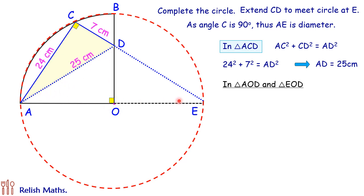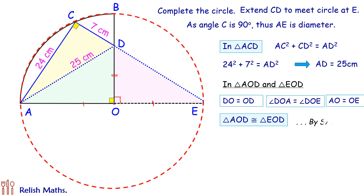Now let's look at triangle AOD and triangle EOD. AOD is the green triangle and EOD is the pink triangle. In these two triangles, OD is common. Also, angle DOA is 90 degrees and angle DOE is also 90 degrees. These two sides, AO and OE, are the radius and thus are also equal. So these two triangles are congruent by SAS.